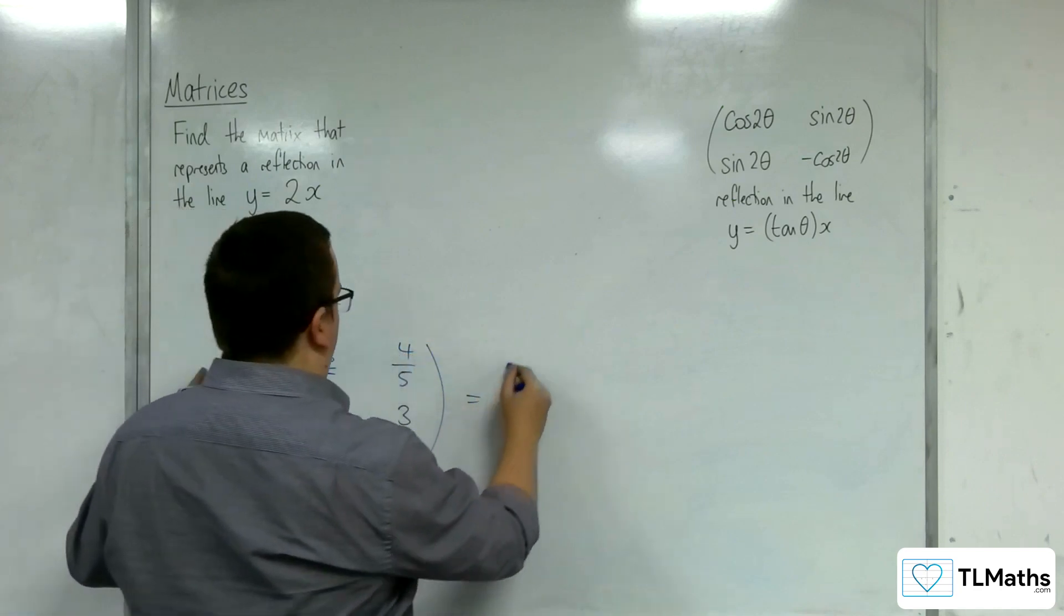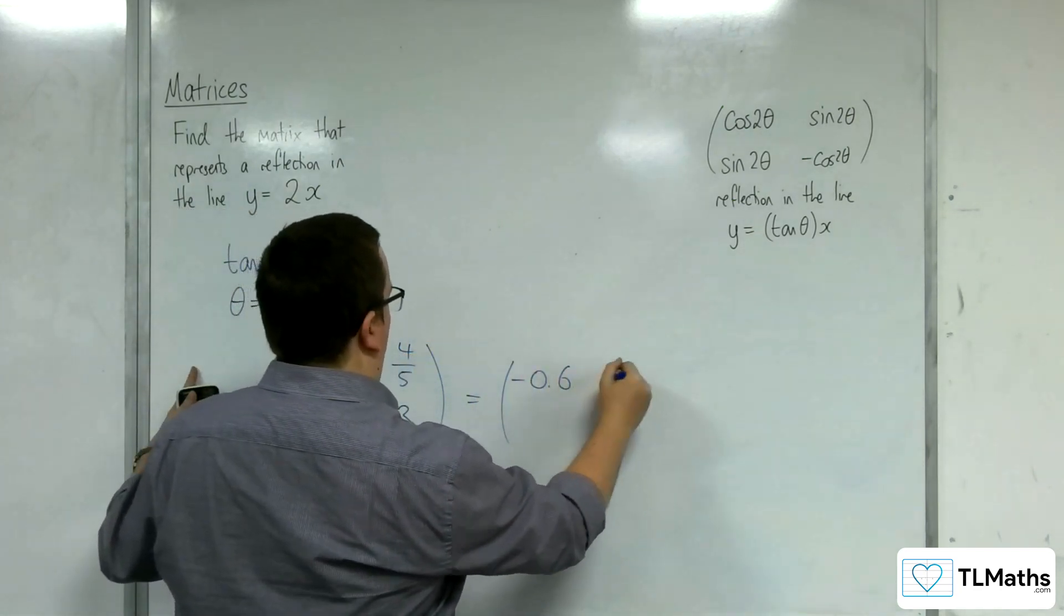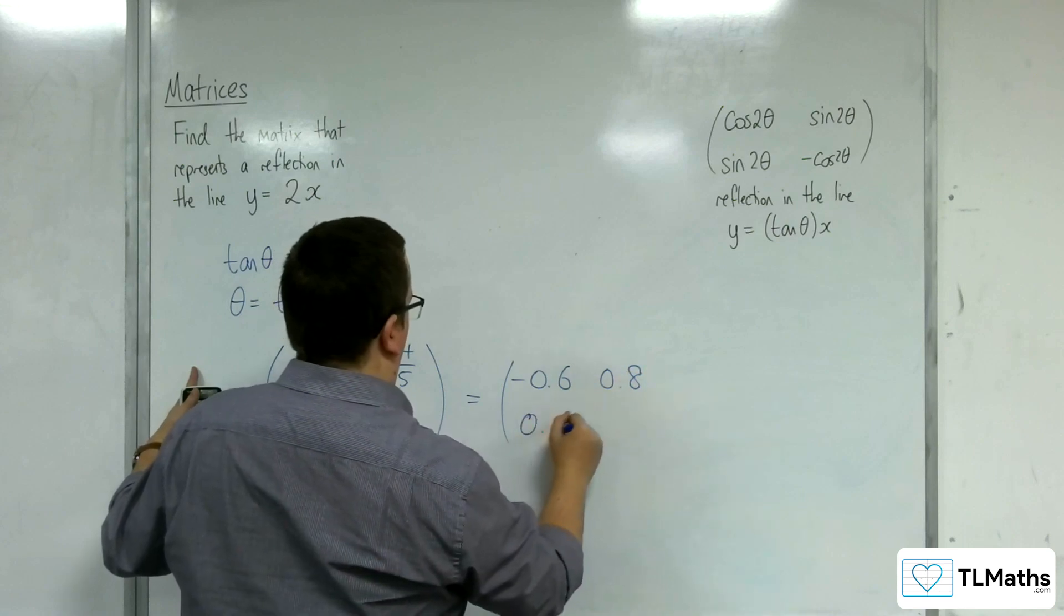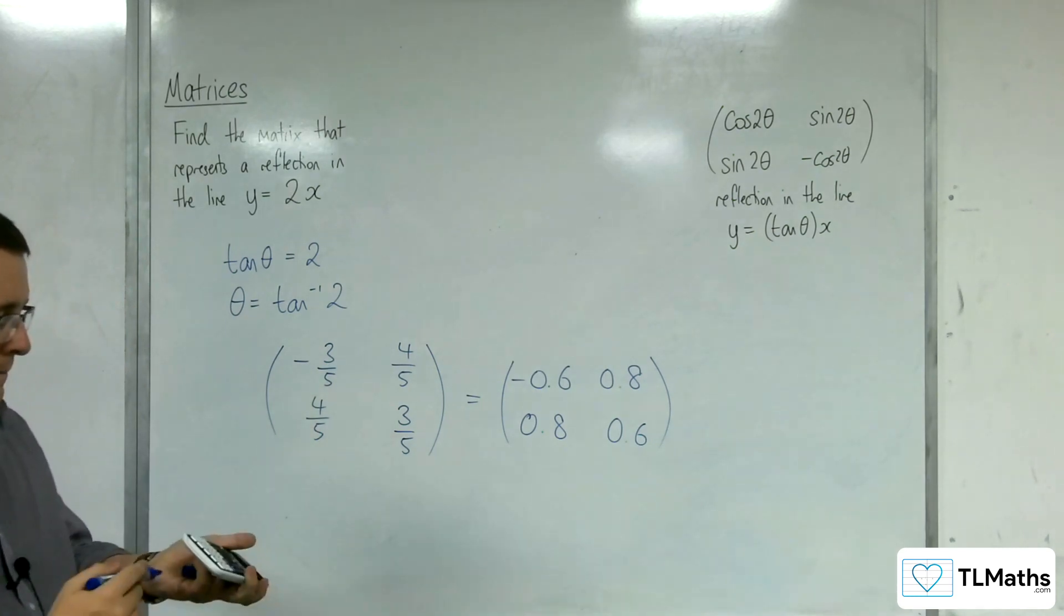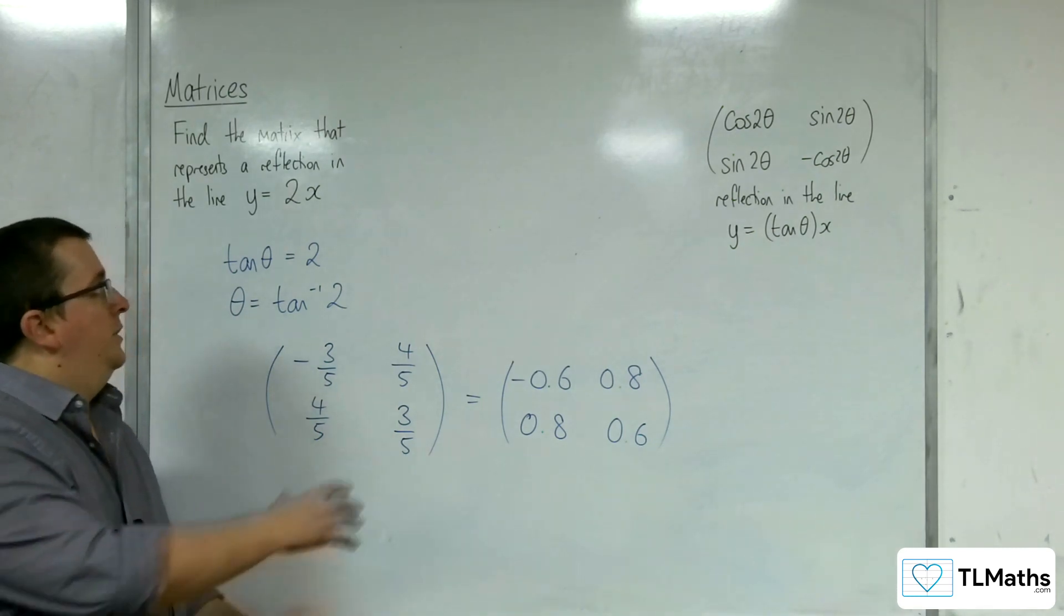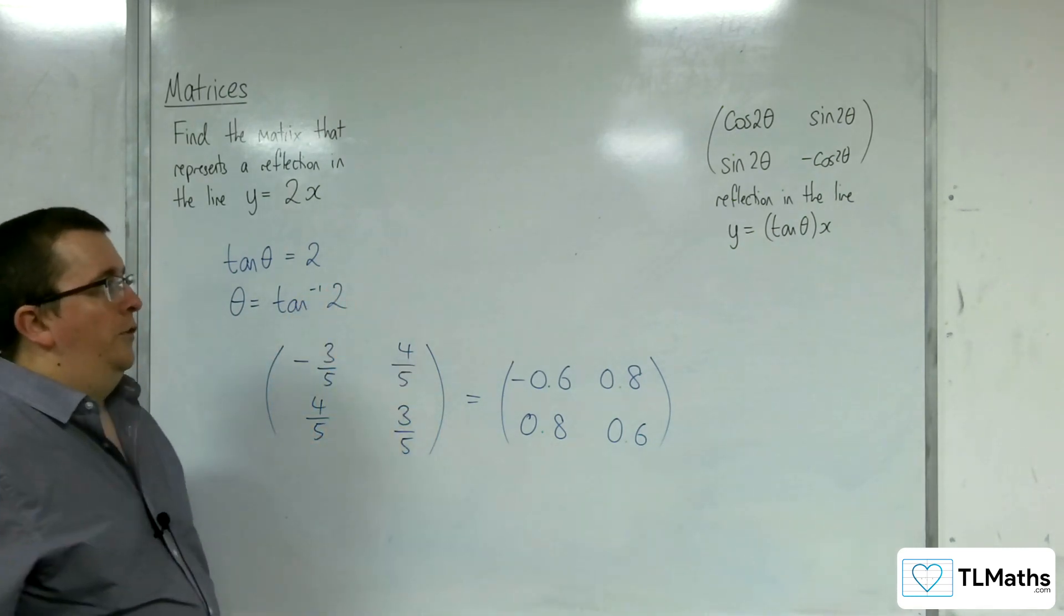So either that or in decimal form, like so. So that is the matrix that we need.